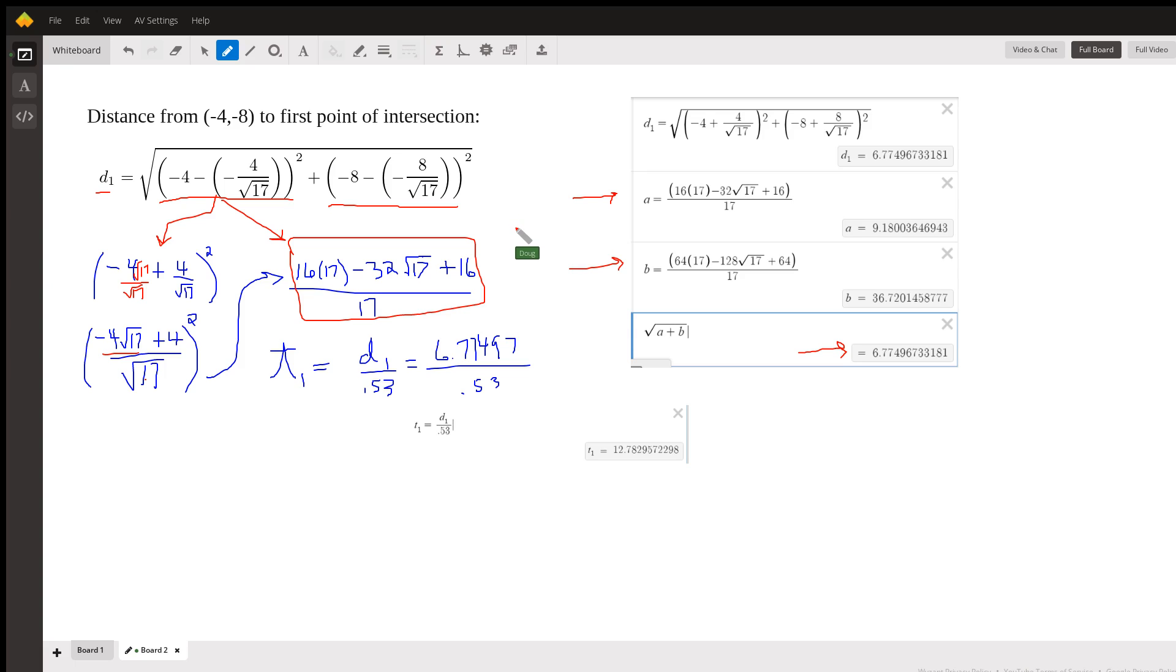And if I want to get the time spent traveling from that point to the asteroid field, I would divide distance, which is this number right here, 6.77, divided by the rate. And the rate for that part of the trip is 0.53 miles per hour. So there's a time for the first part of the trip.